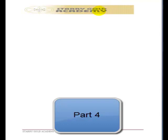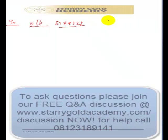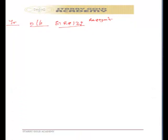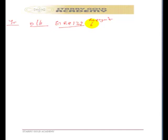Let's look at the amortization table. We have the years given, the opening balance, and the effective interest rate given at 12%. We also have the cash payments, which represent repayments — usually tied to the nominal value of $20,000 at 6%. That means we are repaying 6% of $20,000 every year as interest on the loan. Finally, we have the closing balance.